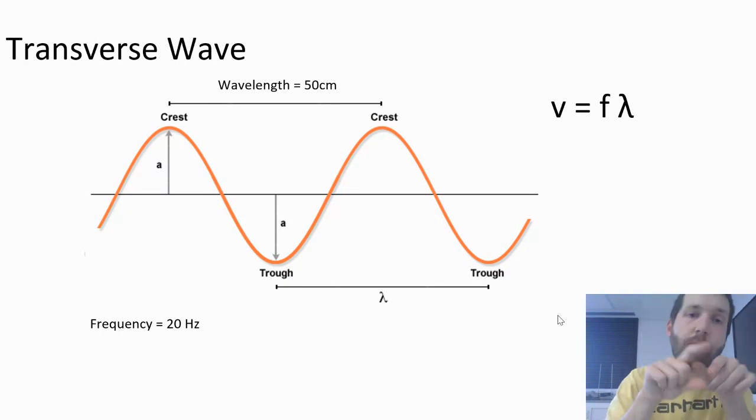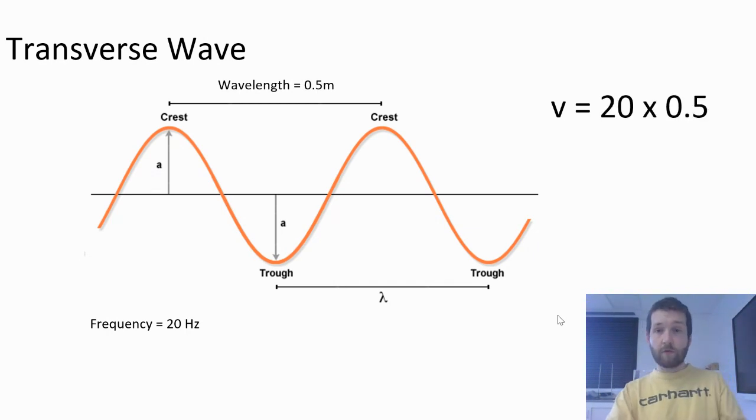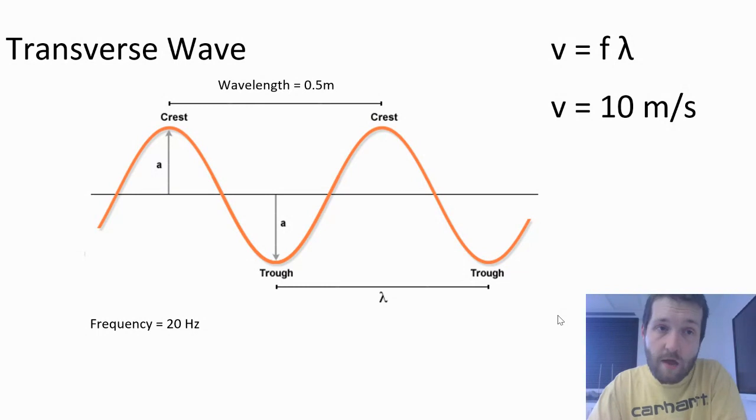Now that wavelength has a prefix in front of it saying centi. We're going to have to change that prefix into just meters. That frequency of 20 hertz, or 20 waves passing every second, that can work for us just fine. So if we change that to 0.5 meters as I have there, and we keep that as 20 hertz, we can do 20 times 0.5 and calculate our wave speed of 10 meters per second.